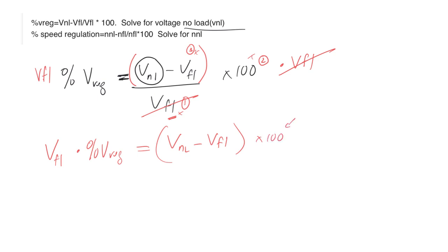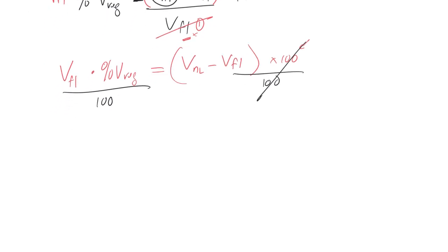Now let's get rid of the 100. Since I'm multiplying, I'm going to divide both sides by 100. These will cancel, but I have to divide this side by 100. So now I've got voltage full load times percent voltage divided by 100 is equal to, now that I've gotten rid of everything on the right side except for what's in brackets, I can get rid of the brackets and just write what I have there.